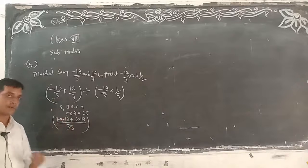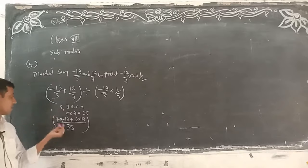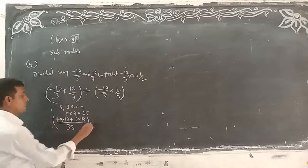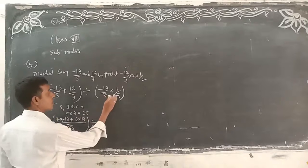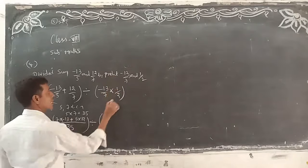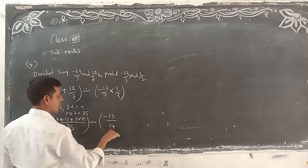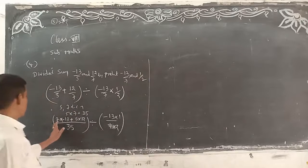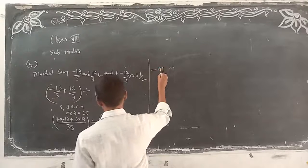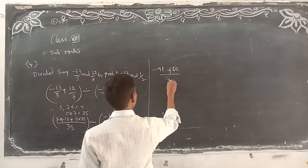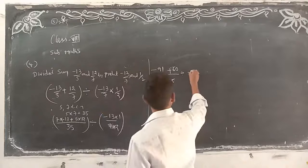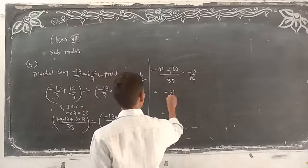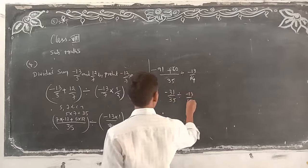5 and 7 LCM is 35. Why? Because it does not cancel in any table. So 5 table: 35 cancels 7 times — write down the numerator minus 13. 7 table: 35 cancels 5 times — into 12. For the denominator, no need to take the LCM. Why? Because it is in the form of a product: minus 13 by 7 into 1 by 2. Write here 13 into 1 over 7 into 2, giving minus 13 by 14. So numerator: minus 91 plus 60 by 35.